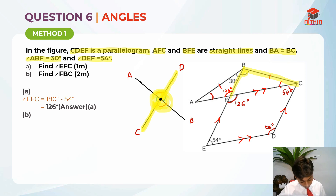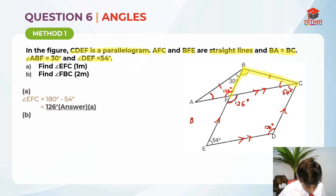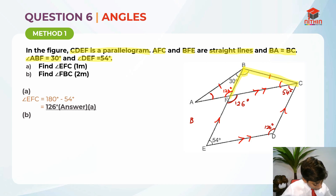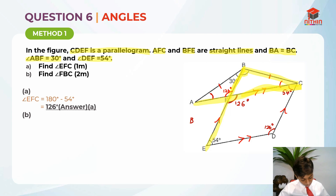Applying this to our figure: we have two straight lines, AFC and BFE, crossing at F. Because of vertically opposite angles, the angle at the other side of F is also 126 degrees.